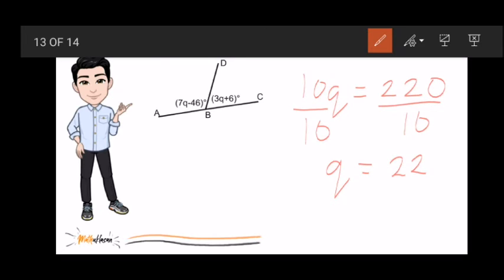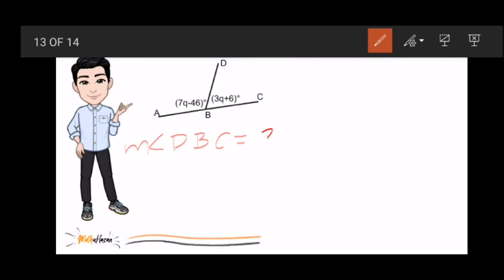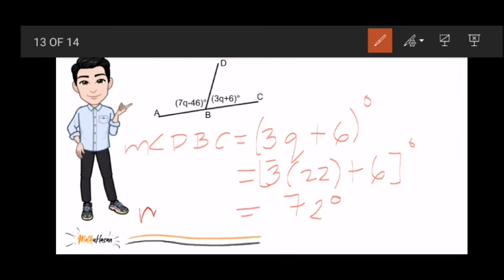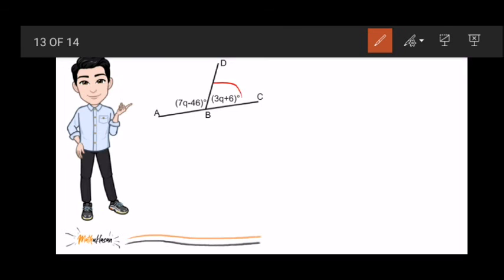Ngayon, hindi pa yan yung measure ng angle DBC. Yan yung measure ng Q. So, paano natin mahanap ngayon yung measure ng angle DBC? Substitute lang natin yung Q dito sa 3Q plus 6. So, 3 times 22 plus 6 will give us what value? Yes, it will give us 72. Tama. Pero, alam natin kanina na ito ay may unit na degrees. So, kung ano man yan, ang sagot natin dyan na 72, kailangan natin lagyan ng degrees. So, that the measure of angle DBC is in terms of degrees. And we now know the value of angle DBC as 72 degrees.